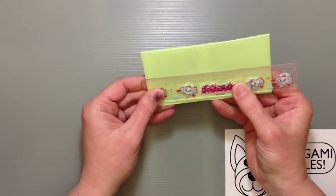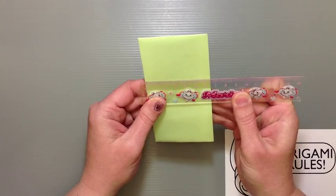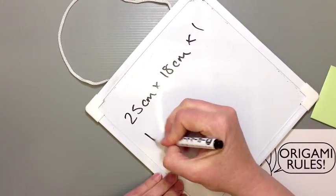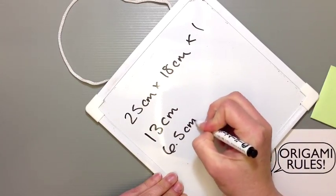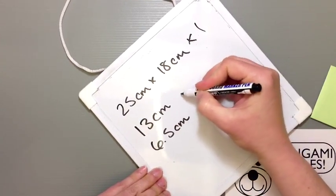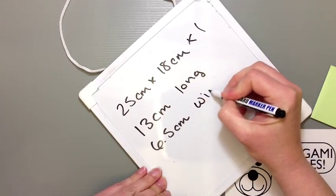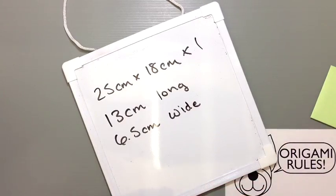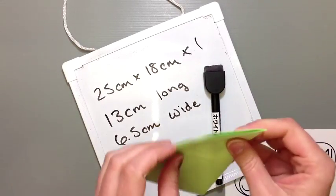But let me give you guys the dimensions here. This is about thirteen by six and a half, depending on which way you're looking at this. But that should give you the finished dimensions of this little envelope.